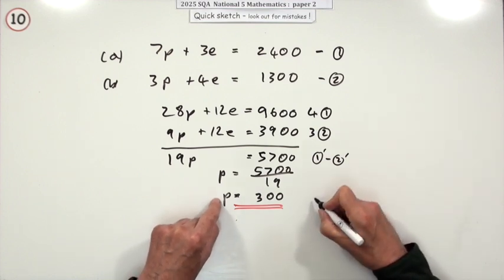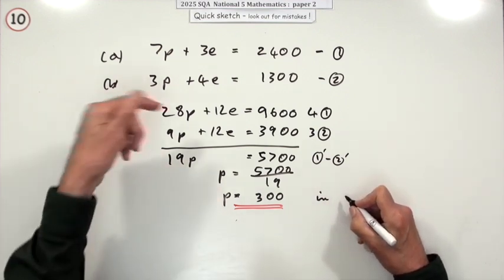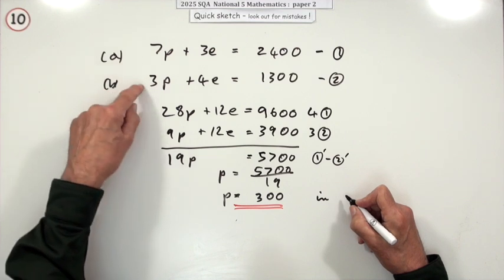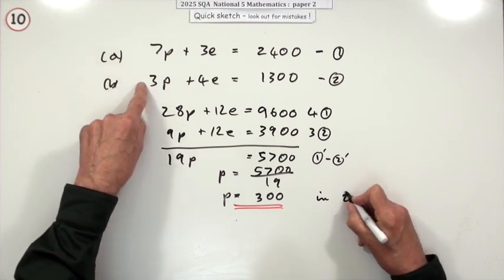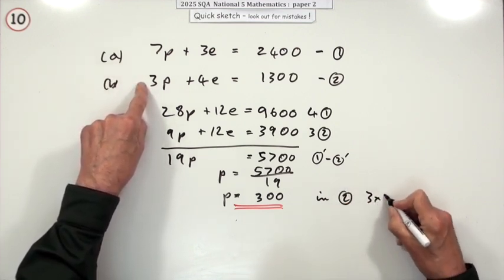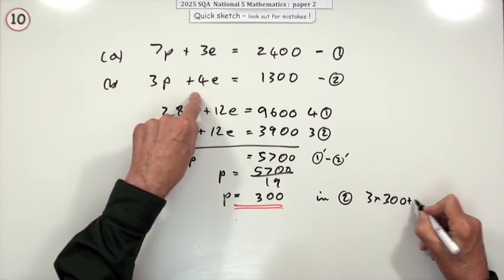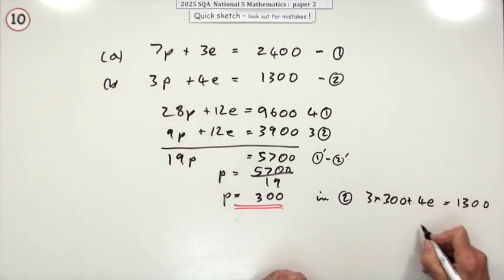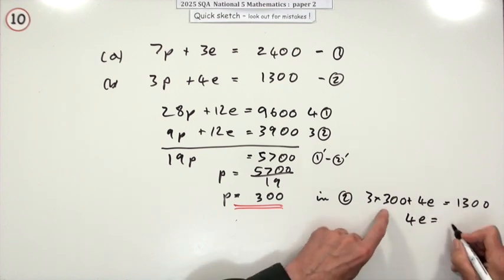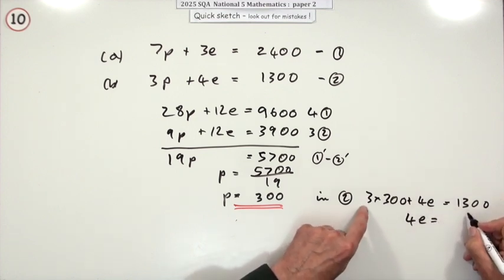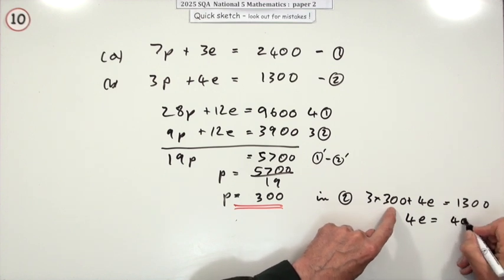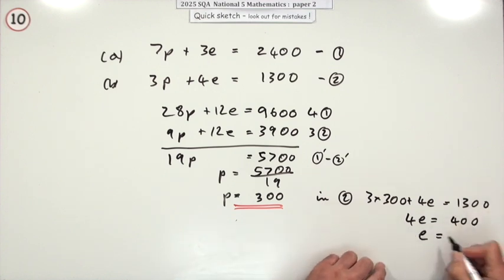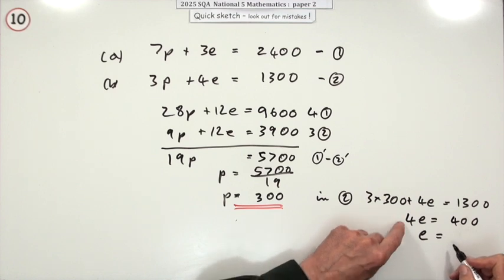Now then just substitute that in. If you put that in two, you'll get 3 times 300 plus 4e equals 1,300. So that means 9, I'll just write it this way. 9e is going to be the 1,300 minus the 900, which is 400. And 4 of them means that's 100.